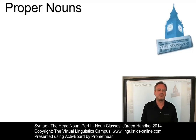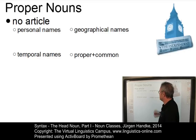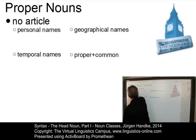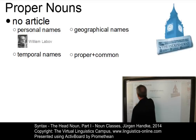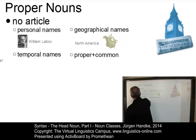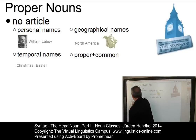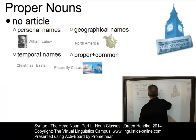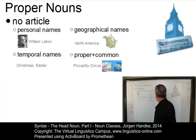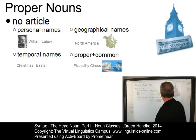Depending on the presence or absence of pre-modification, two groups of proper nouns can be identified. One group where we have proper nouns without an article — for example, personal names such as William Labov, or geographical names such as North America. We have temporal names such as Christmas or Easter, that define particular events. Or we have combinations of proper and common nouns, such as Piccadilly Circus.